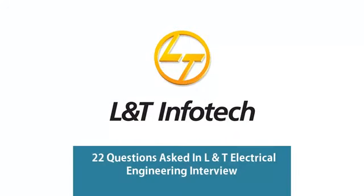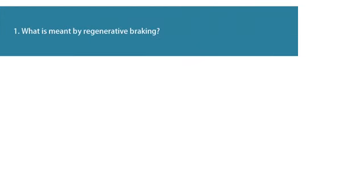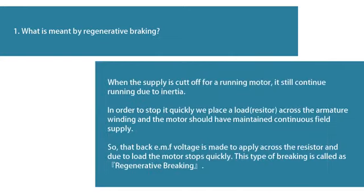Today I am going to share about 22 questions asked in L&T Electrical Engineering interview. Question 1: What is meant by regenerative braking? When the supply is cut off for a running motor, it still continues running due to inertia. In order to stop it quickly, we place a resistor across the armature winding and the motor should have maintained continuous field supply. The back EMF voltage is made to apply across the resistor and due to the load the motor stops quickly. This type of braking is called regenerative braking.